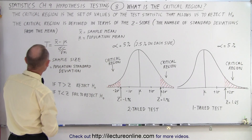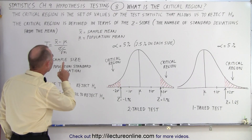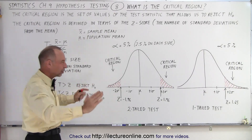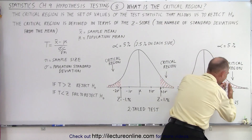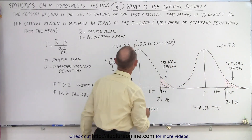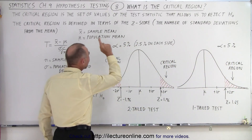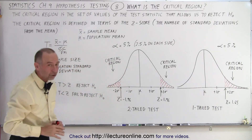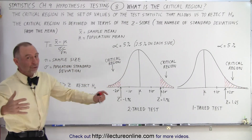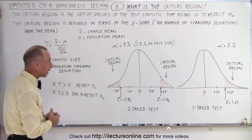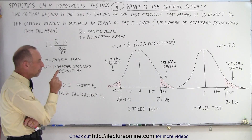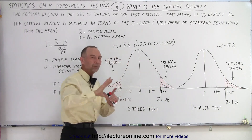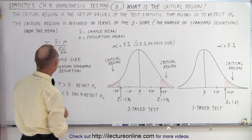The critical region is the set of values of the test statistic that allows us to reject the null hypothesis — or tells us not to reject the null hypothesis. So if the test statistic falls within the critical region, we will reject the null hypothesis.